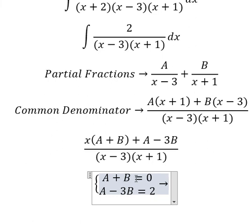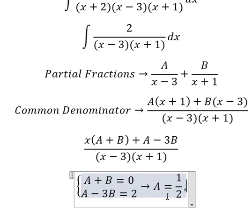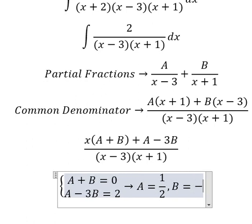And now we can find the solutions of A and B. So A equals to 1 over 2. B equals to negative 1 over 2.